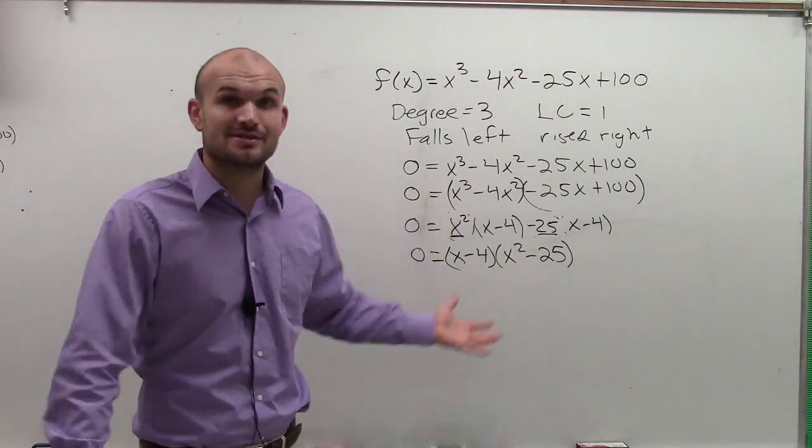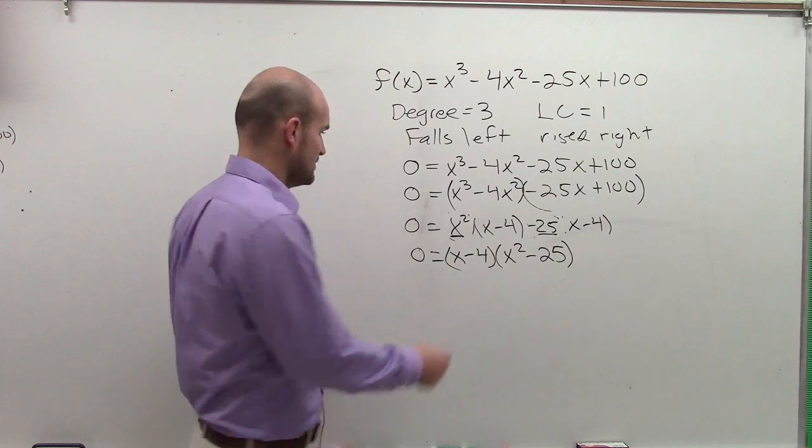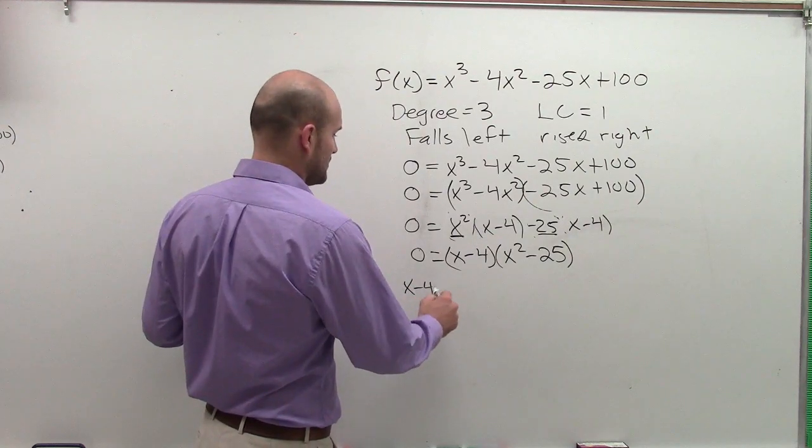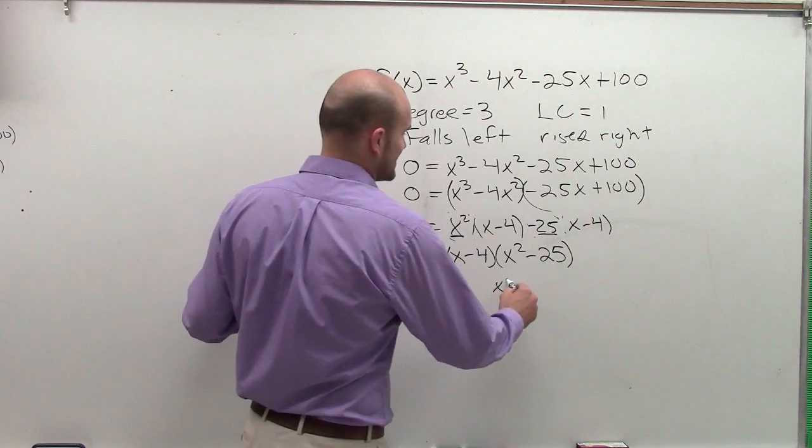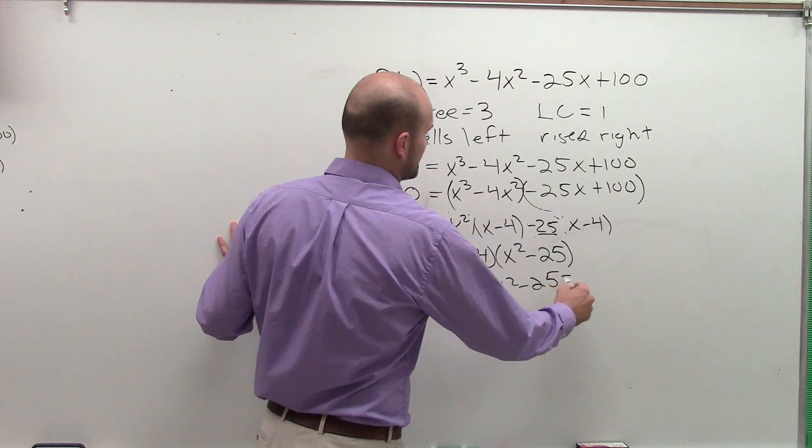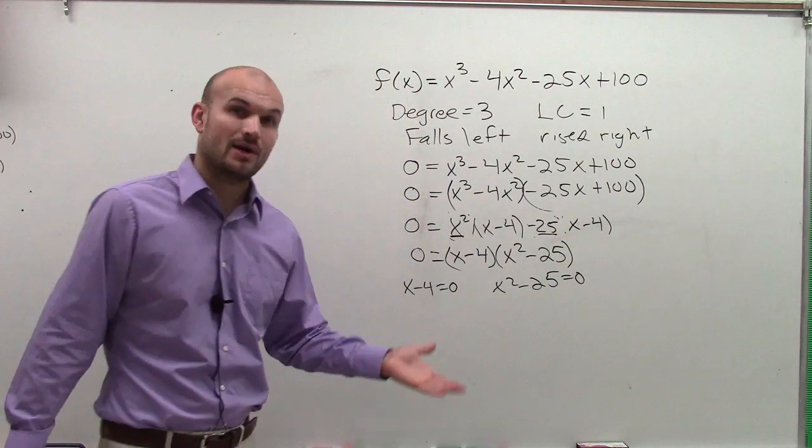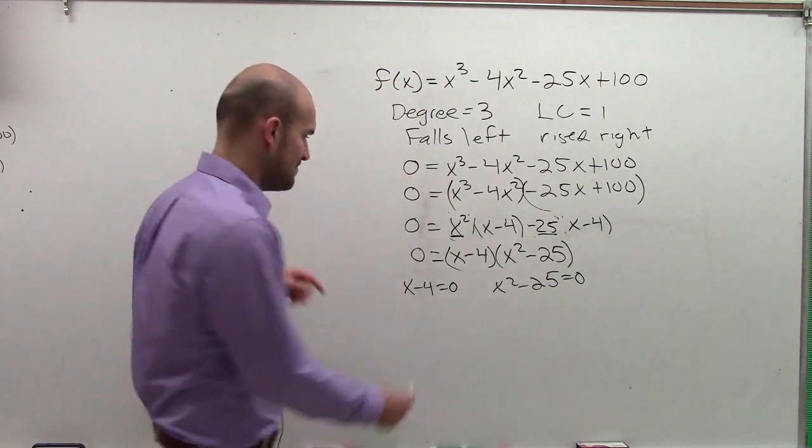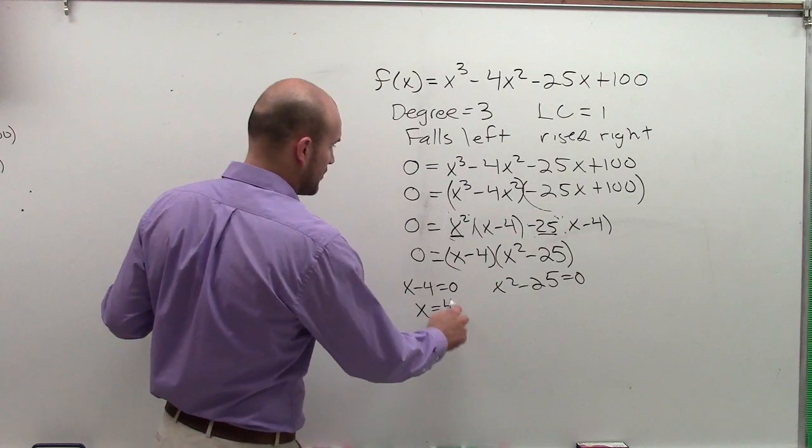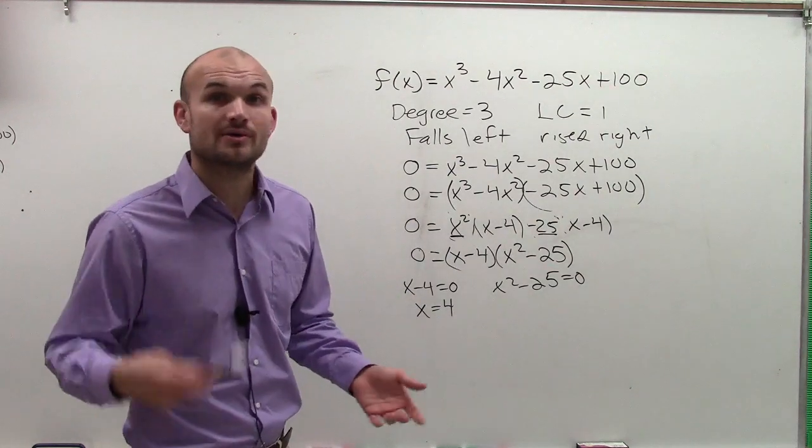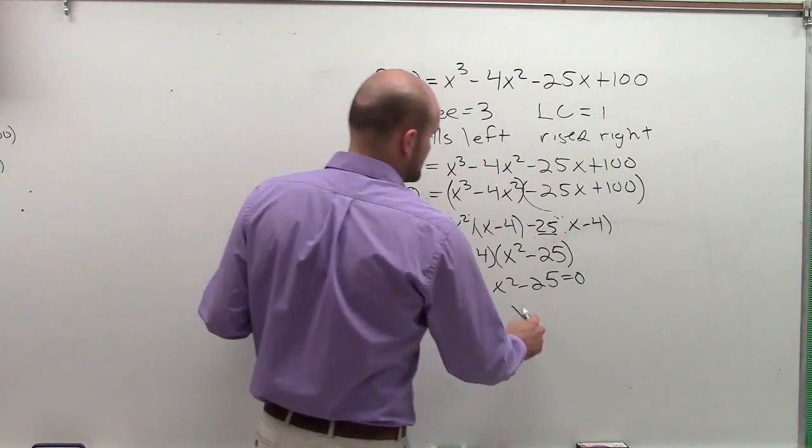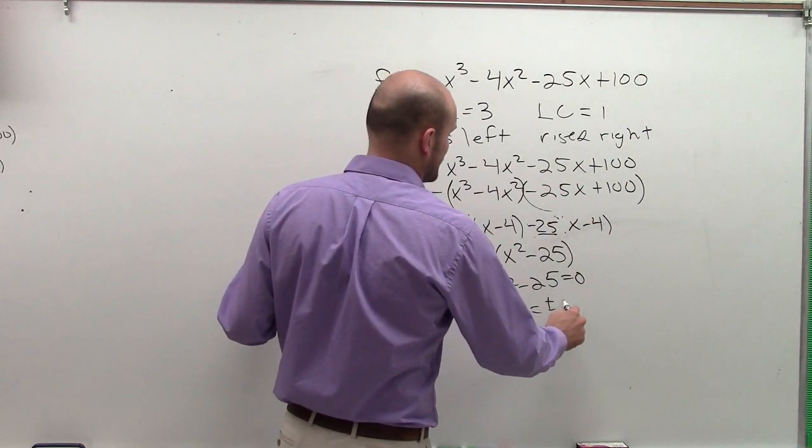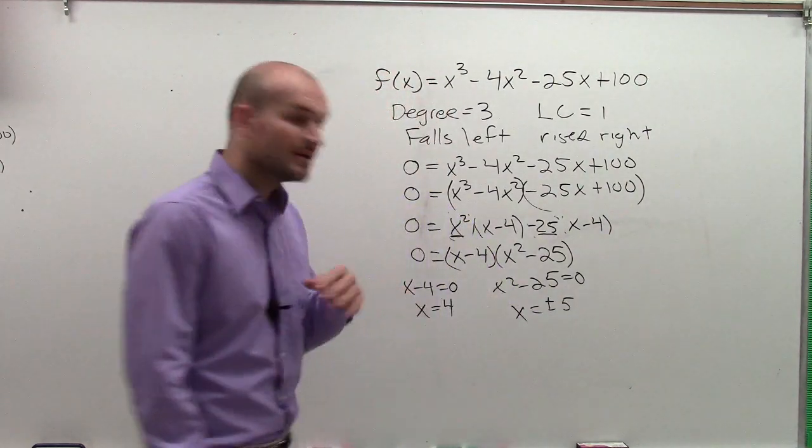And then, there we go. Now I can use the zero product property to solve. So I have x minus 4 equals 0 and x squared minus 25 equals 0 by using the zero product property. Then, my zeros are going to be x equals 4. Add 25 to the other side, take the square root, I get plus or minus 5. So x equals plus or minus 5.